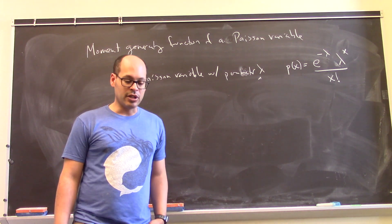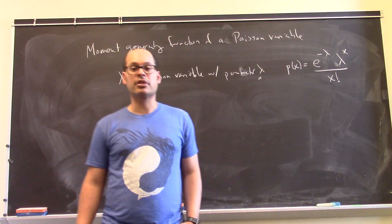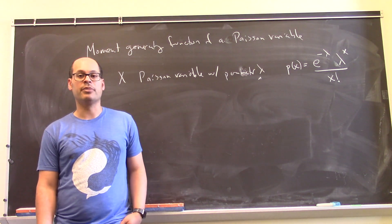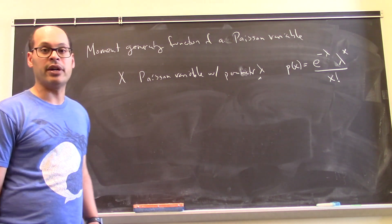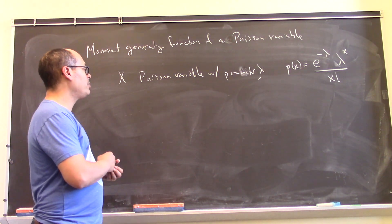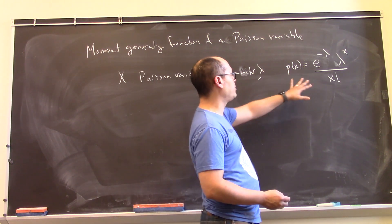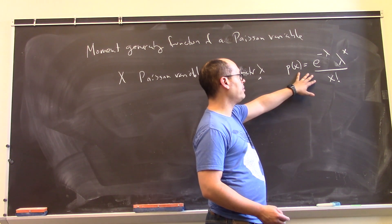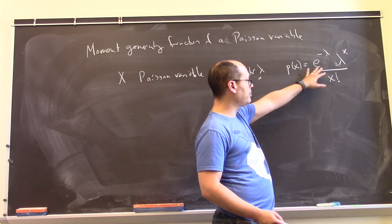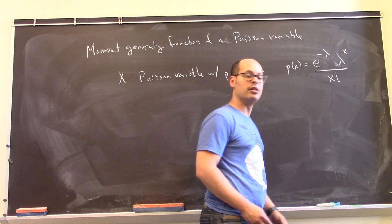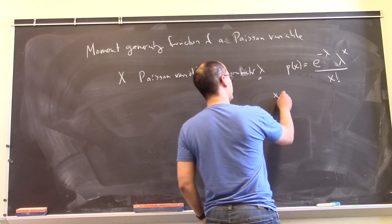All right, so let's take a look at the moment generating function for a Poisson random variable and then use that to figure out its mean and variance. So remember a Poisson random variable with parameter lambda is one that has this particular probability mass function, e to the minus lambda, lambda to the x over x factorial, where x here is some non-negative integer.